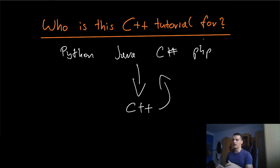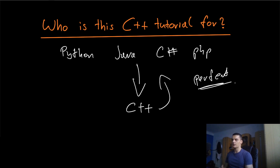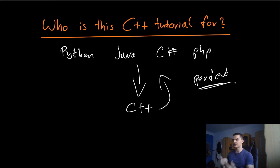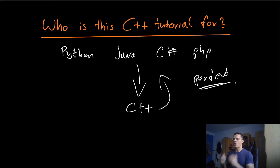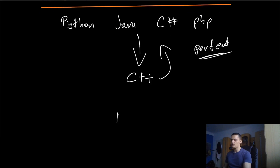If you're in that category, this tutorial series is perfect for you, because you already know basic programming — you know what loops are, what functions are, return values, data types, exception handling, classes, objects, and so on. All you need to learn here is how to do those things in C++, plus add concepts like pointers, templates, references, and memory allocation. You already know the basics and don't need to worry about them.